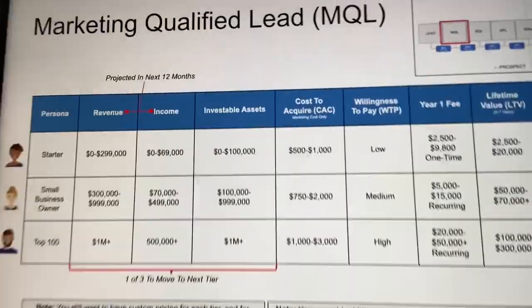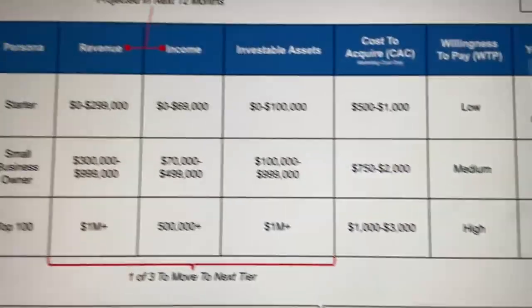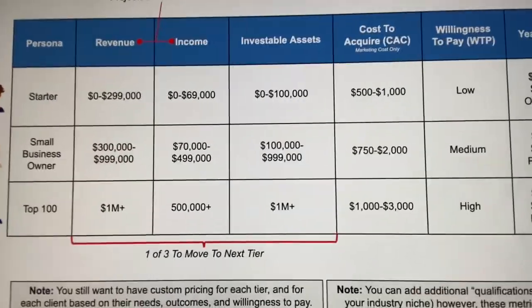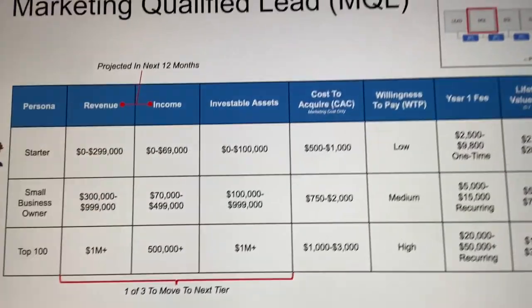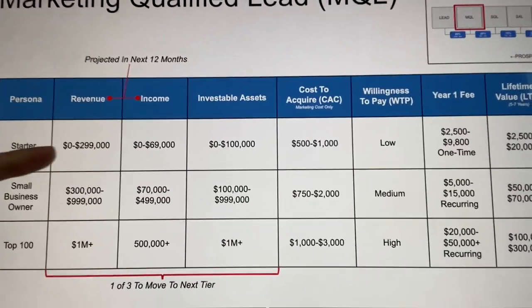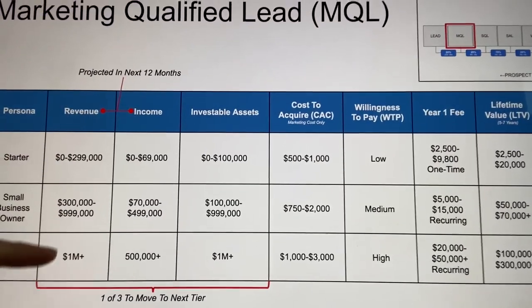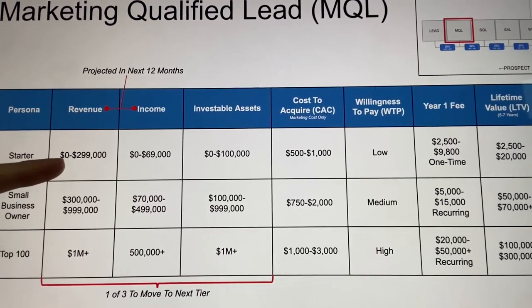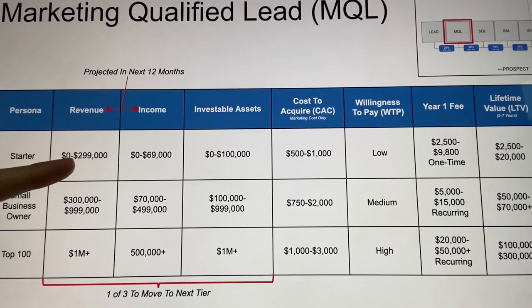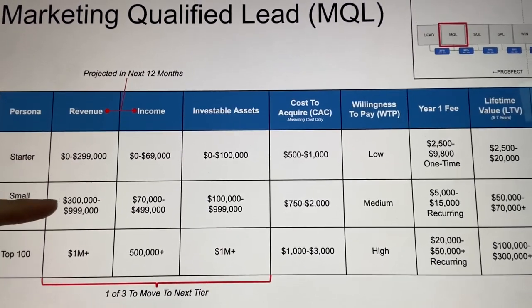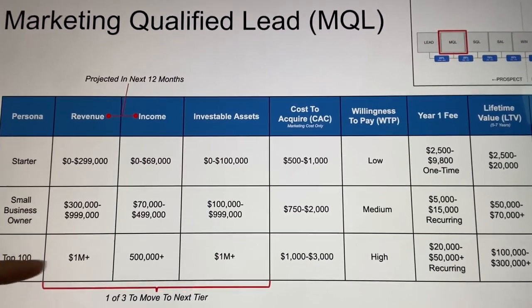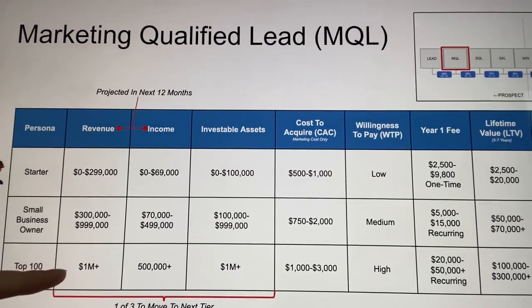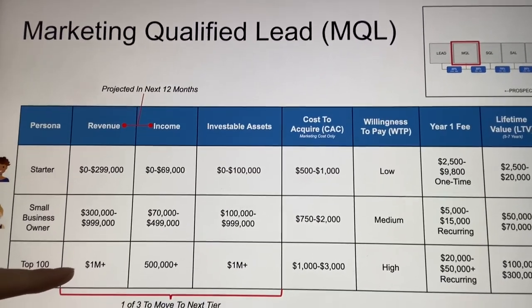You can see how much revenue the person has, how much income they have, and how much investable assets they have — which tier they fall into. Going from zero to $300,000 in revenue, that's a starter. $300,000 to a million, that's a small business owner. A million plus, that's a top 100 — somebody that could be a really great opportunity for our business.